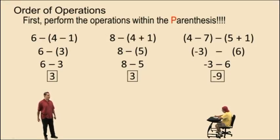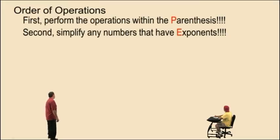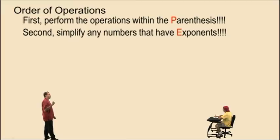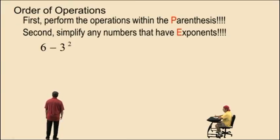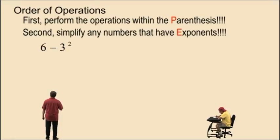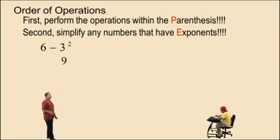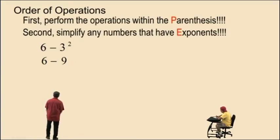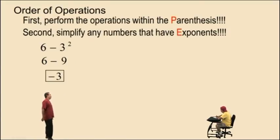Now, our second category in order of operations is to simplify any numbers that have exponents. In our last video, we talked about exponents. So here we have 6 subtract 3 squared. We have to simplify the exponent part, which is 3 squared. And 3 squared is 3 times 3, which is 9. We bring down our work. 6 subtract 9 is negative 3.